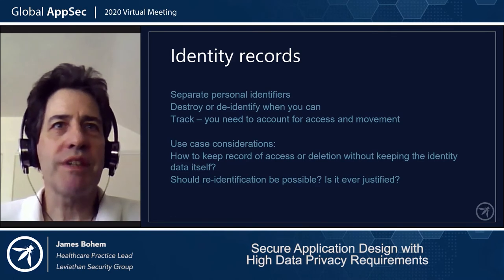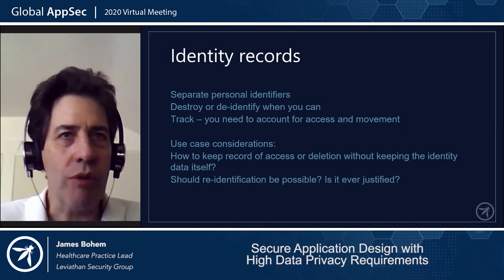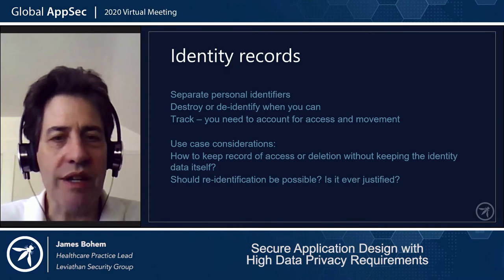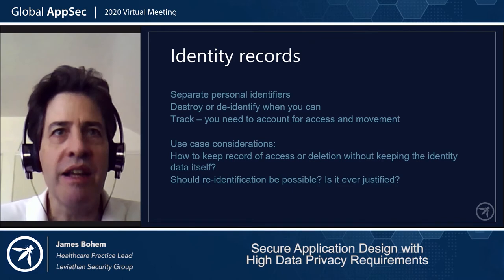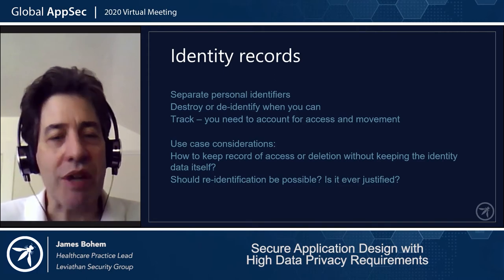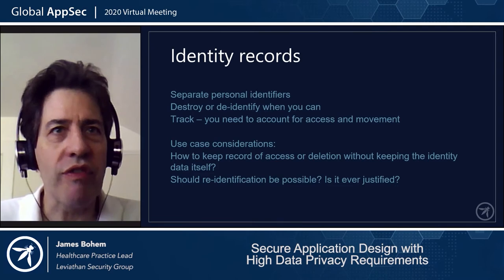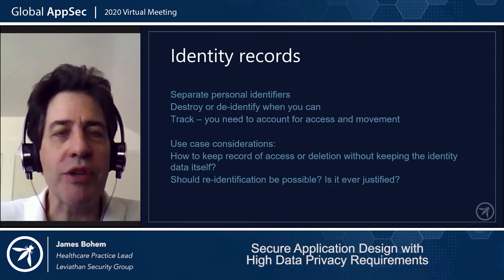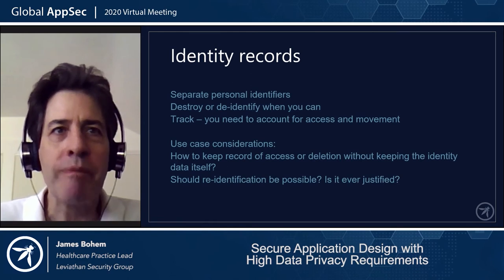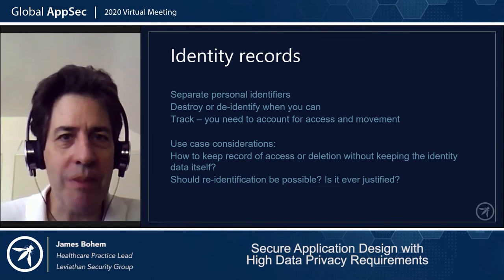On identity records: we can destroy or de-identify the identity information, and once identity is separated, we need to account for its access and movement — when it is combined back up, when it is sent anywhere. Interesting problems arise: if identity is special and separate and we sometimes remove it from the view or data, how do we keep records of access or deletion if we don't have the original identifier in its original form? Another question is whether re-identification should even be possible. Sometimes this is a one-way street — once you've de-identified somebody, you're never coming back.